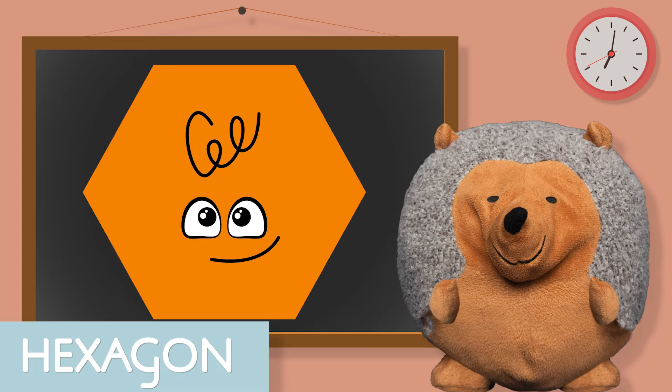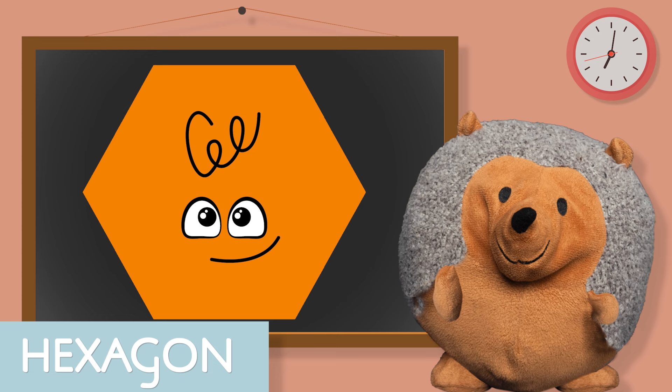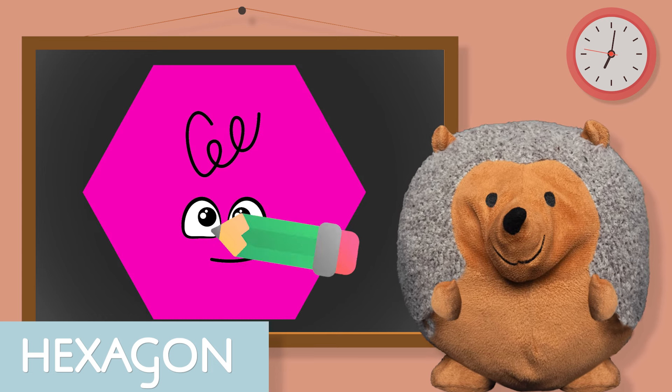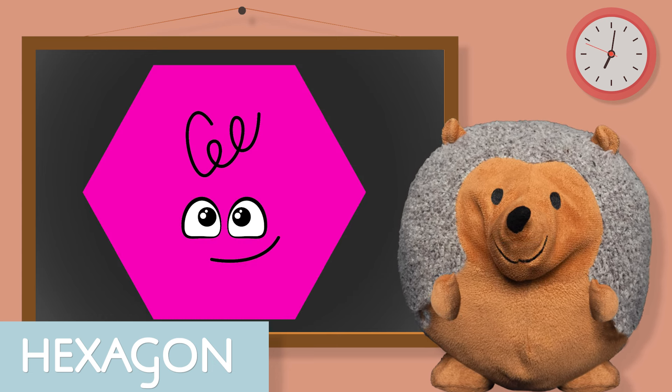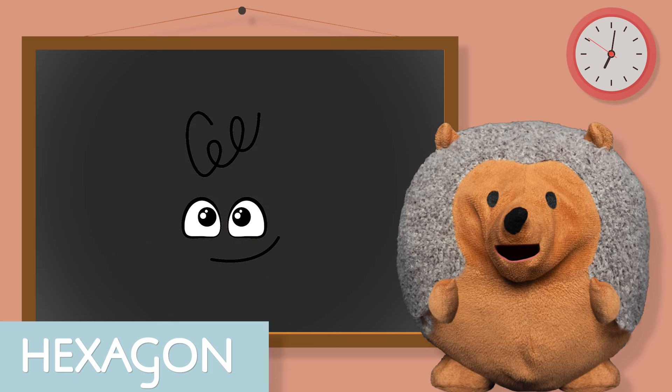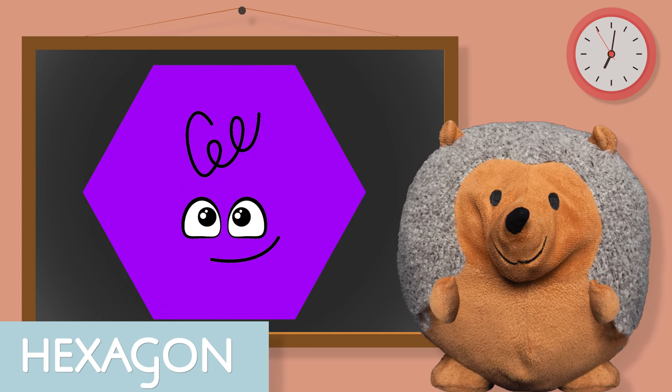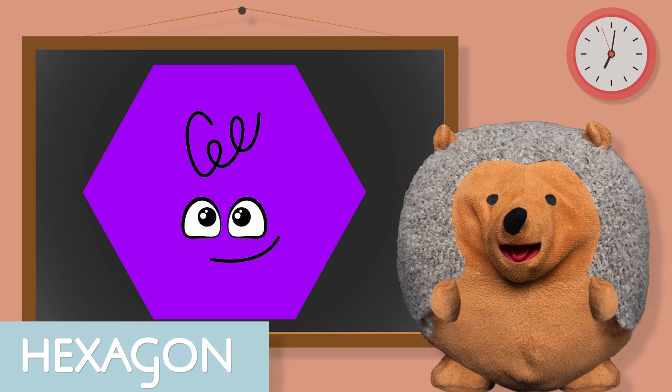Now we have a hexagon. And this hexagon is orange. And this one is a pink hexagon. And then this one is a purple hexagon. So now you know what a hexagon looks like.